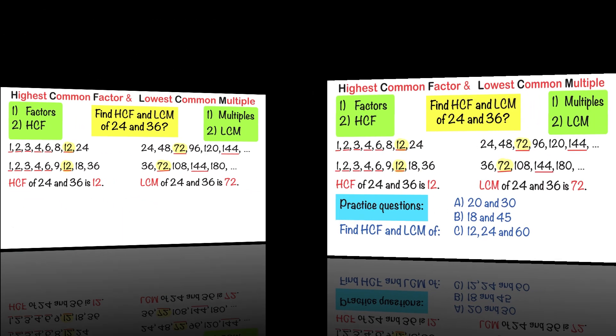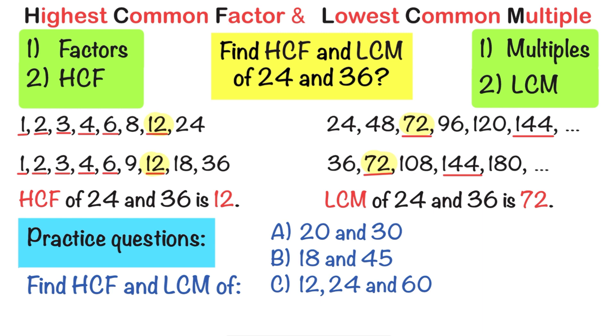Here are some questions for you. Find the highest common factor and the lowest common multiple of the following numbers. Pause the video here and have a go. When you're ready, check the answers in the description below.